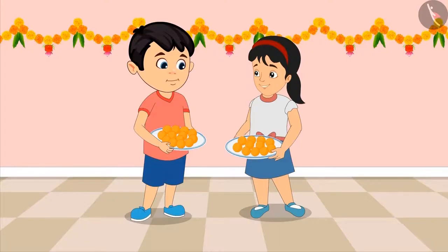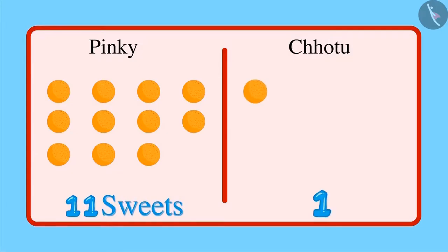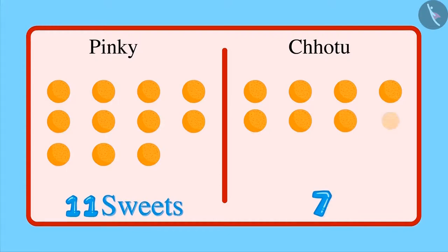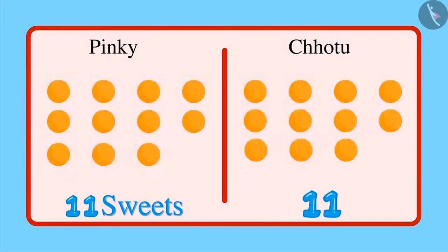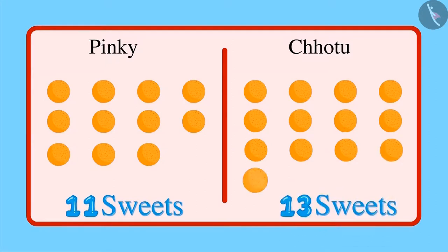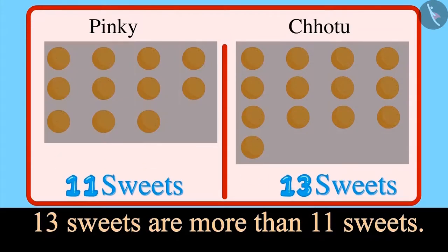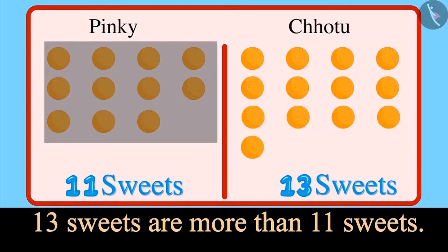Okay, Chotu. Now you count the number of sweets in your plate. 1, 2, 3, 4, 5, 6, 7, 8, 9, 10 and 11 — that's equal to the number of sweets in your plate. But there are more: 12 and 13 sweets. I see. That means 13 sweets are more than 11 sweets. So, you have more sweets in your plate.